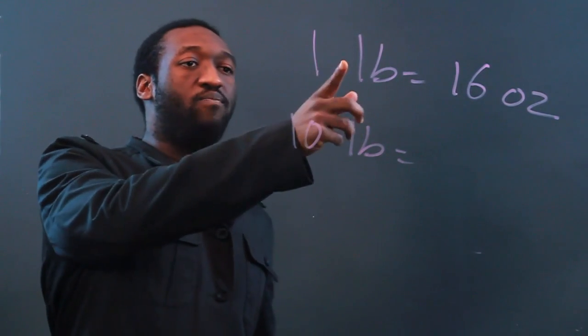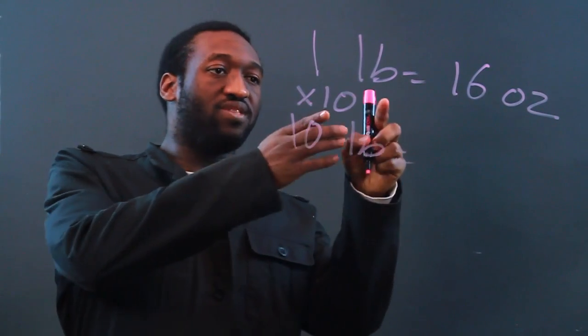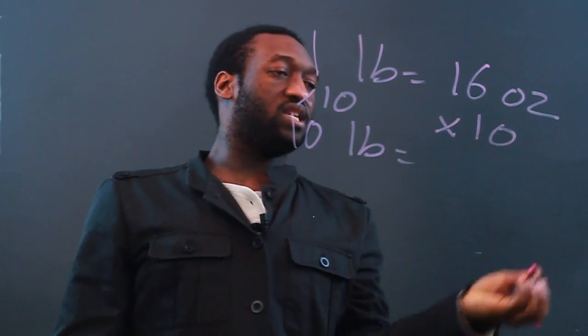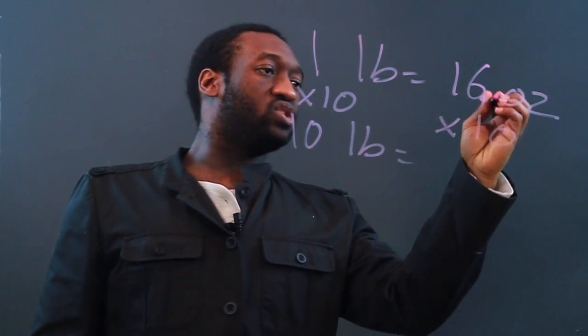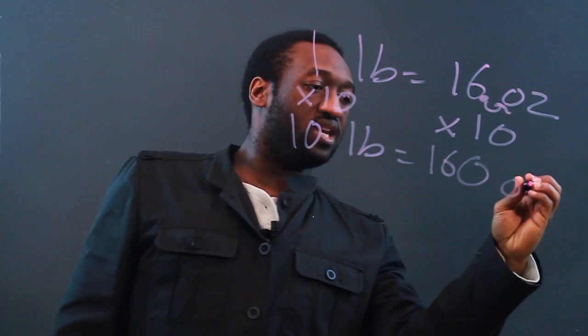Now to go from one pound to 10 pounds, I have to multiply by 10. So I have to do the same thing on the other side of the equation. Multiplying 16 by 10 is the same thing as just moving the decimal over once to get 160 ounces.